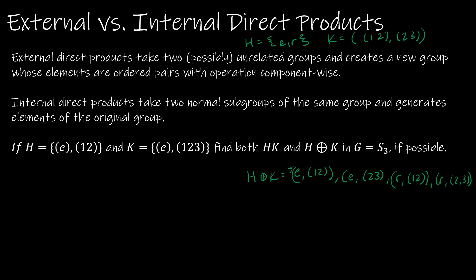For an internal direct product, I would have to have those conditions met, which means that H times K is going to give me the entire group G. And obviously, that's not the case for this example, because I've taken them from two completely unrelated groups. So an external direct product, really, there's no rules, but an internal direct product, you need to make sure it meets the conditions.